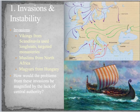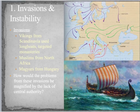The red arrows represent Muslims coming across from North Africa. And then the Magyars, a nomadic group, are represented in green from Hungary. The problems of these invasions were magnified by the lack of central authority, because people in the West had dealt with invasions before but usually had some military protection from the Romans. Now that's gone, and so people are pretty much left to fend for themselves, making these invasions even more scary than they would have been in the time of the Romans.